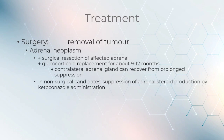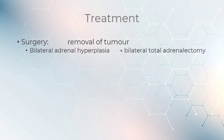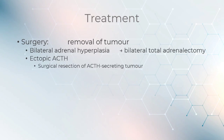In non-surgical candidates, suppression of adrenal steroid production by ketoconazole administration is used. An alternative is mifepristone, an antiglucocorticoid, which can control hyperglycemia secondary to hypercortisolism in adults with endogenous Cushing syndrome; however, it should be avoided in women who could become pregnant. Bilateral adrenal hyperplasia requires bilateral total adrenalectomy, while ectopic ACTH indicates surgical resection of the ACTH-secreting tumor. To control excess cortisol, the following medications may be prescribed.